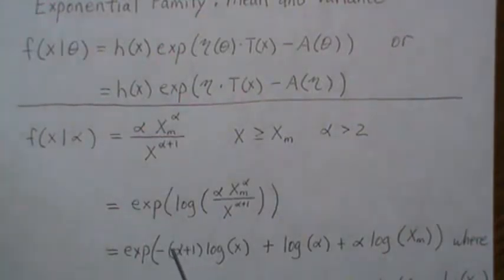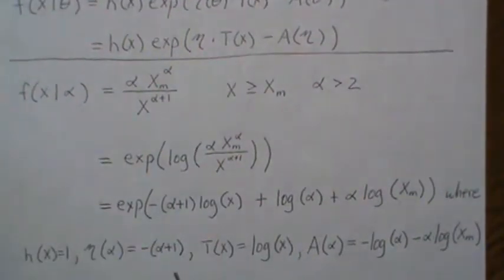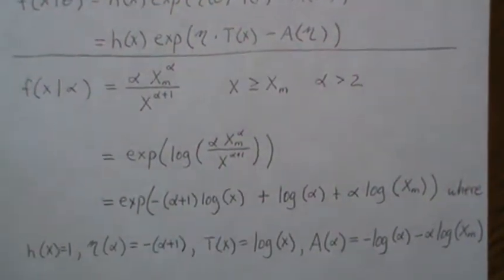Here we have all just parameter, and then our function of X is just one, and that is indeed the case the way that we make this into an exponential family.